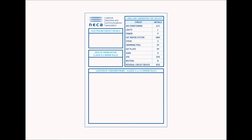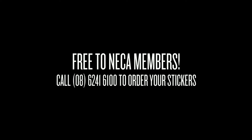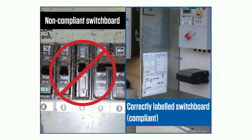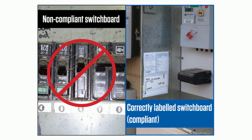The sticker has a space to write the date of energization and a section to draw a map that shows the location of the consumer mains.